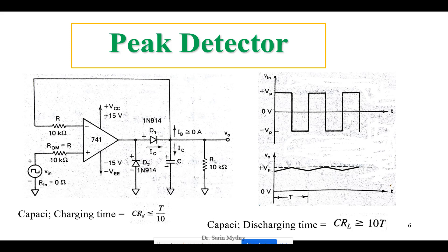Now let us enter into this circuit. Up to now we have seen different kinds of non-sinusoidal waveforms like square waves, triangular waves, sawtooth waves, and pulse waves. These are called non-sinusoidal waveforms.